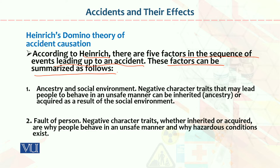دوسرا factor ہے fault of person. یہ common practice دیکھی گئی ہے کہ most of the time organizations کے اندر جو accidents ہوتے ہیں وہاں پہ negligence کسی شخص کی سامنے آتی ہے — یا تو employee خود negligent ہوتا ہے یا worker یا supervisor staff کی negligence سامنے آتی ہے۔ ان چیزوں کو control کرنا ہی primarily مقصد ہے۔